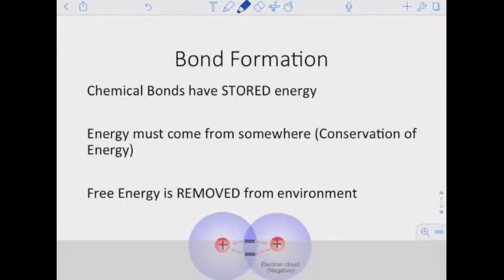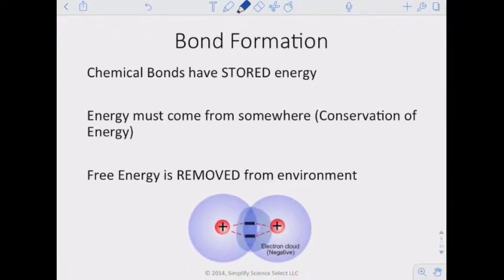Chemical bonds have stored energy. Those positive and negative attractions in bonds store energy, and that energy must come from somewhere. The law of conservation of energy says if there's energy in those stored bonds, it must have come from somewhere — that free energy is removed from the environment. And if we're breaking bonds, we can put energy back into the environment.